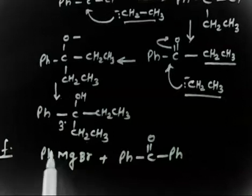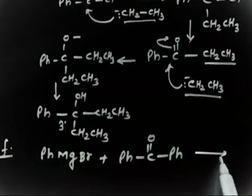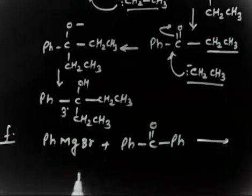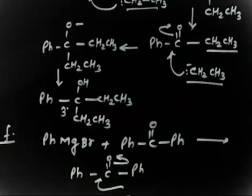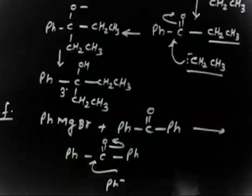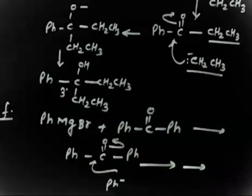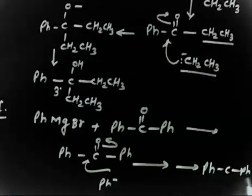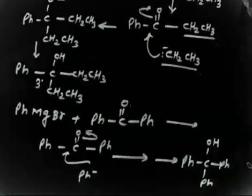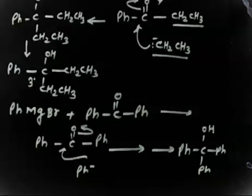In this case you will have Ph minus, so you have to attack. Ph minus, so Ph-CO-Ph, and now here you have Ph minus. This was up, this opens up. And if you do hydrolysis, H3O plus you also add, you will have Ph-C-Ph-Ph-OH. So we will get tertiary alcohol.